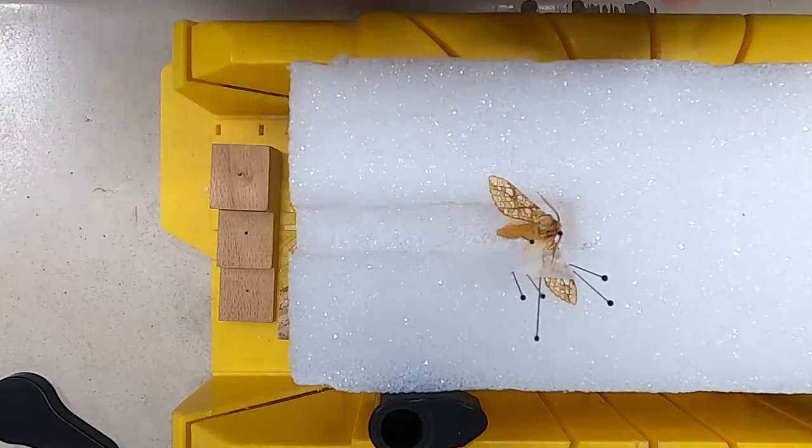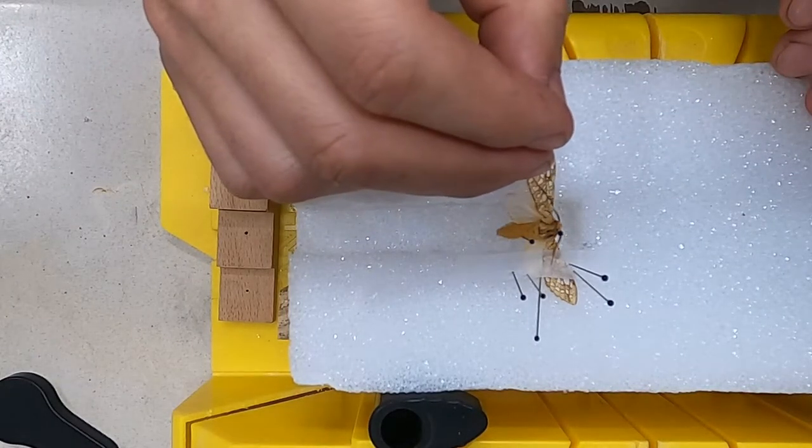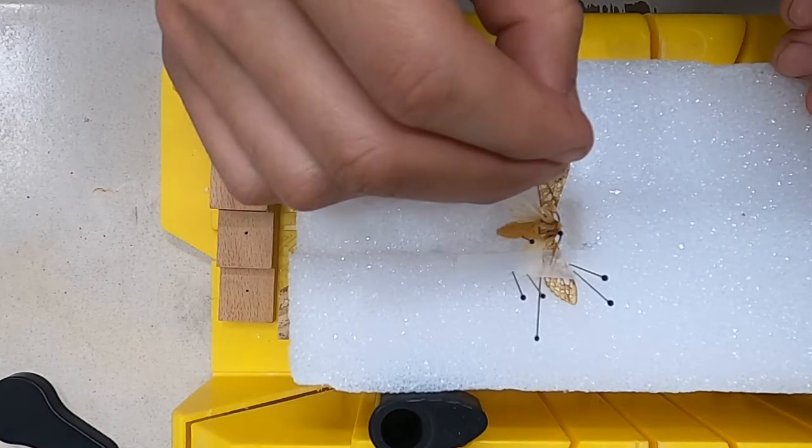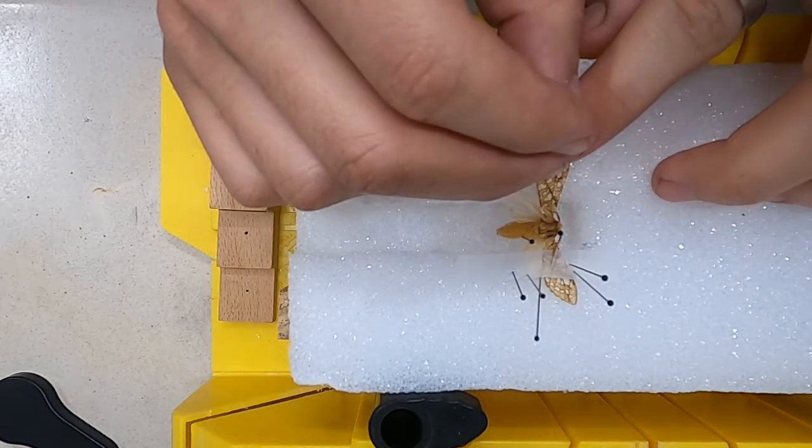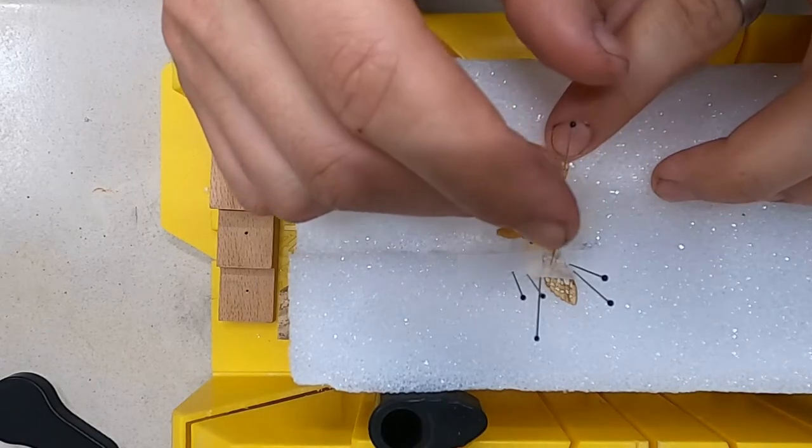Spread out the other set of wings in the same way by pulling on that main vein until the bottom edge of the wing is perpendicular with the body, and you want the secondary wing to be just under the back edge of the main wing.